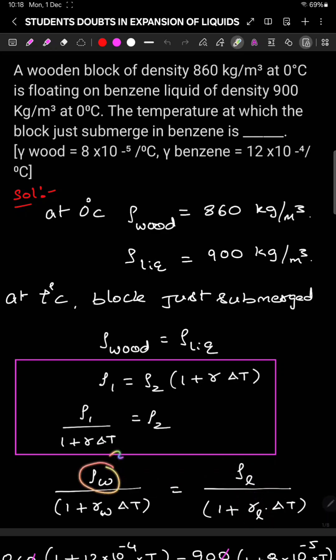Here density of the wood given at 0 degree Celsius, density of liquid given at 0 degree Celsius. Gamma wood is given 8 into 10 power minus 5, and gamma liquid is given 12 into 10 power minus 4.